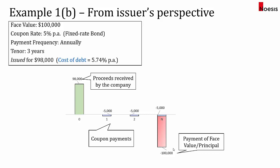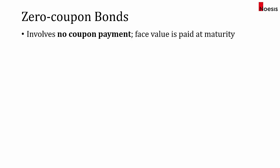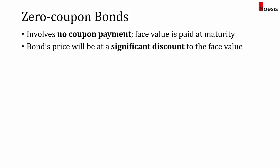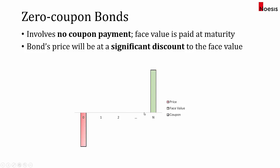Moving on to zero-coupon bonds. As the name suggests, there is no coupon paid during the life of the bond. It involves no coupon payment, and at the maturity of the bond, only the face value will be paid. Since there is no coupon paid in the interim, the bond's price will normally be at a large discount to the face value. The investor pays a certain sum lower than the par value, and at maturity the face value is paid back.